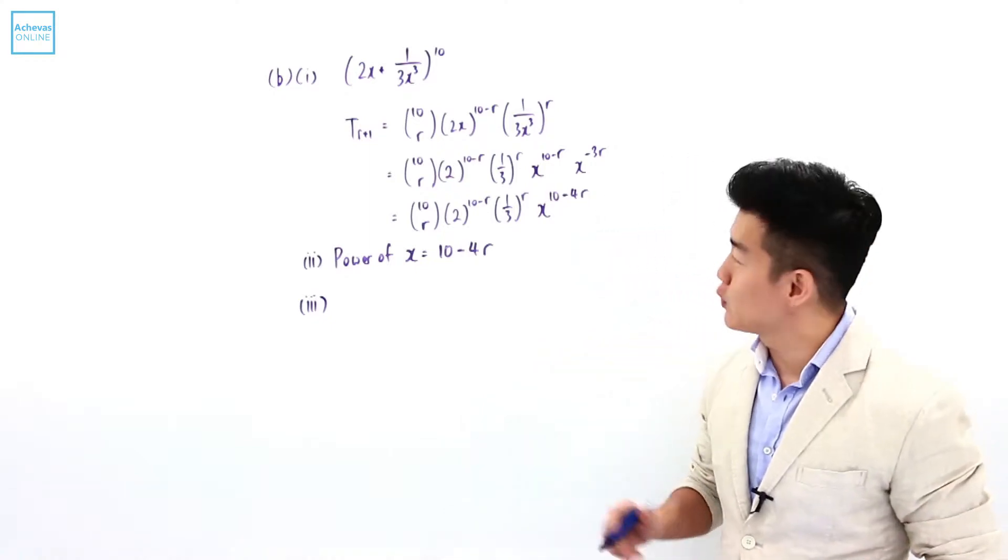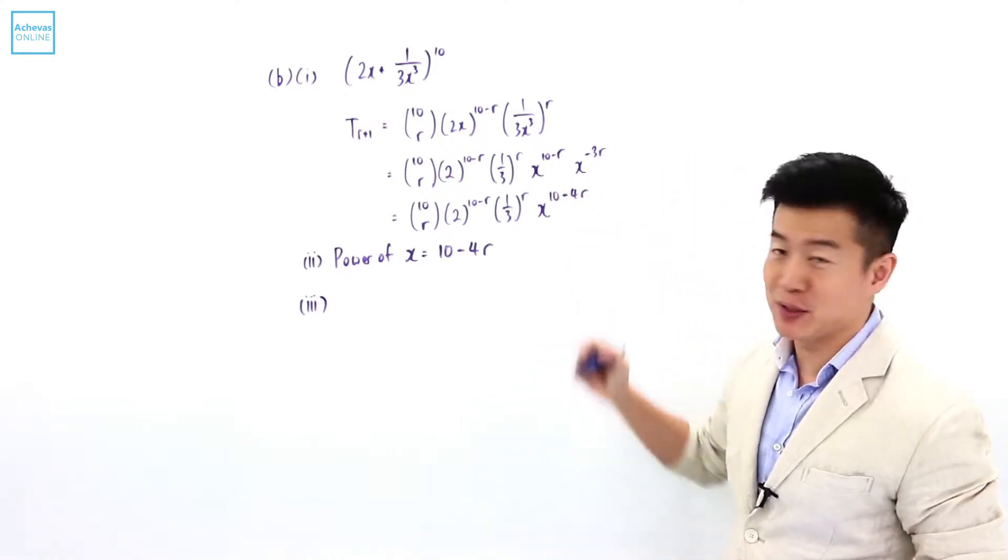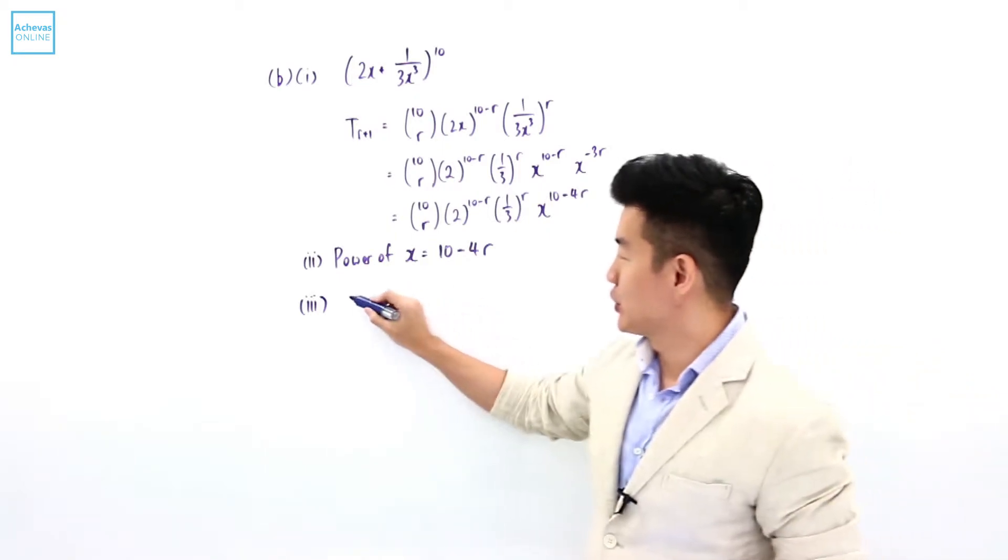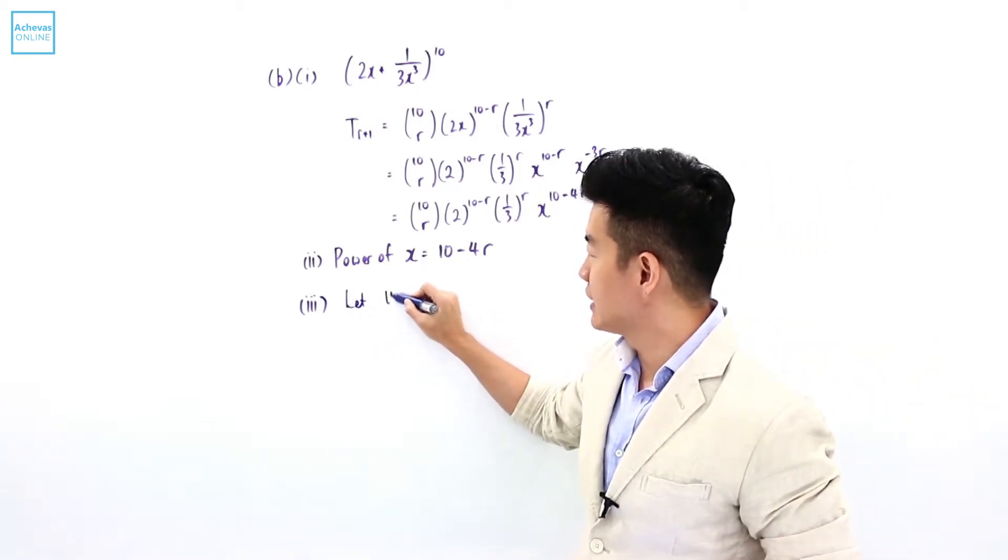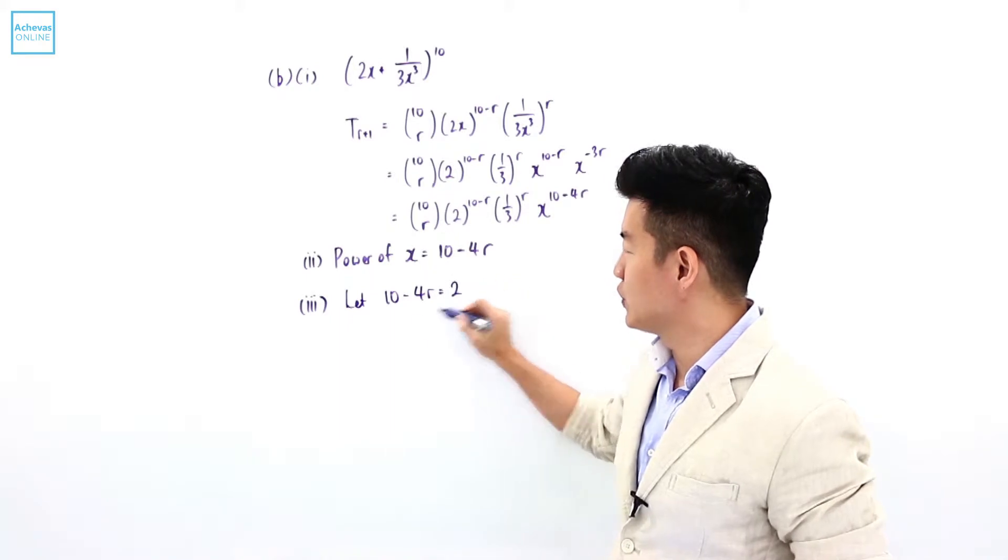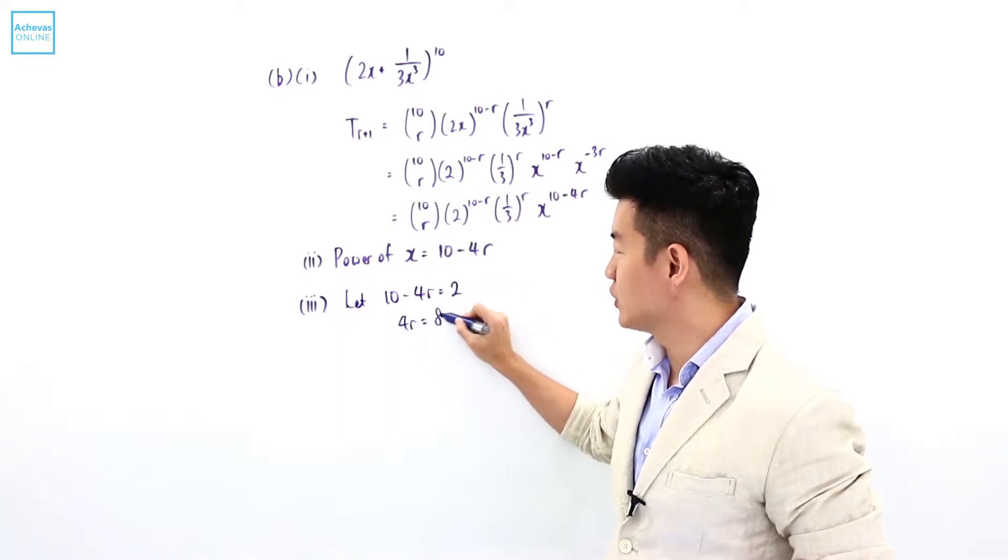To determine the coefficient of x square, I'm going to let the power of x be equal to 2. So, letting 10 minus 4r be equal to 2, that means 4r is equal to 8.